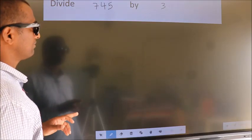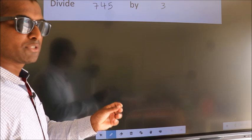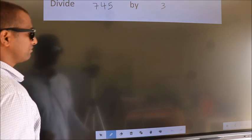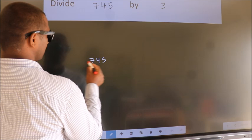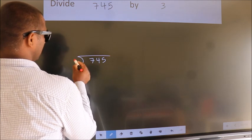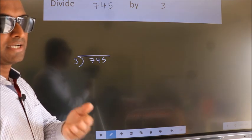Divide 745 by 3. To do this division, we should frame it in this way. 745 here, 3 here. This is your step 1. Next.